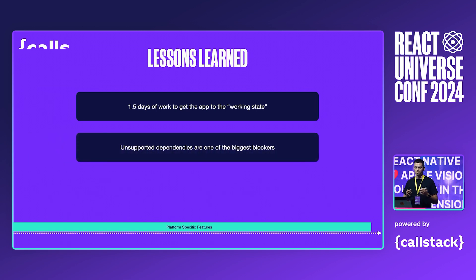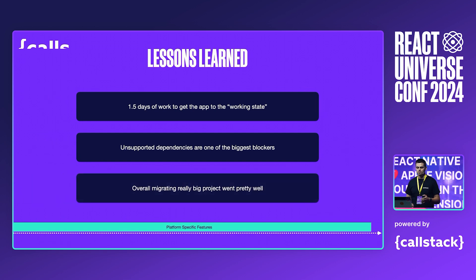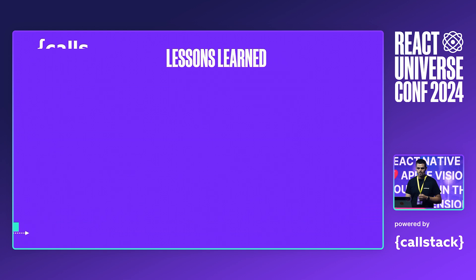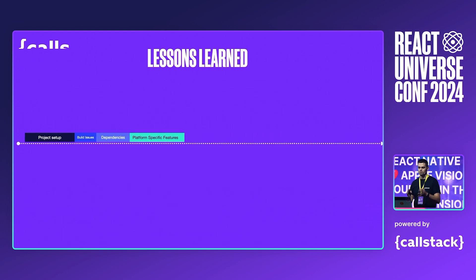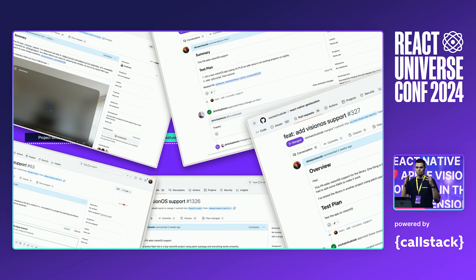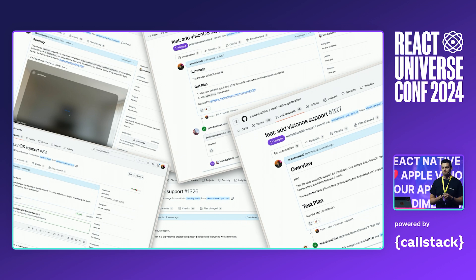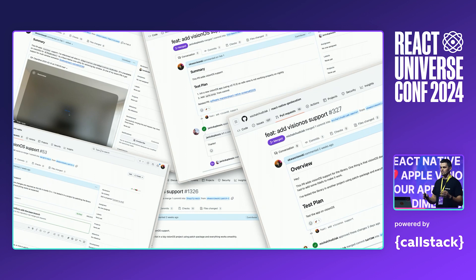One of the biggest blockers are definitely dependencies. Thankfully, most of them can be quickly tested using patch-package. I would say this experiment went pretty well — the app works and it didn't take months as anticipated. Most of the time was spent on getting the app to build and fixing the dependencies. But in the future, this process will get faster as more and more dependencies and build tools support Vision OS. One thing I didn't include in this timeline is contributing the code back to the libraries. This was a really important step to avoid the nightmare of maintaining a fork or a patch, which can really impact your upgrading experience and slow down your development. So upstream your patches if possible.